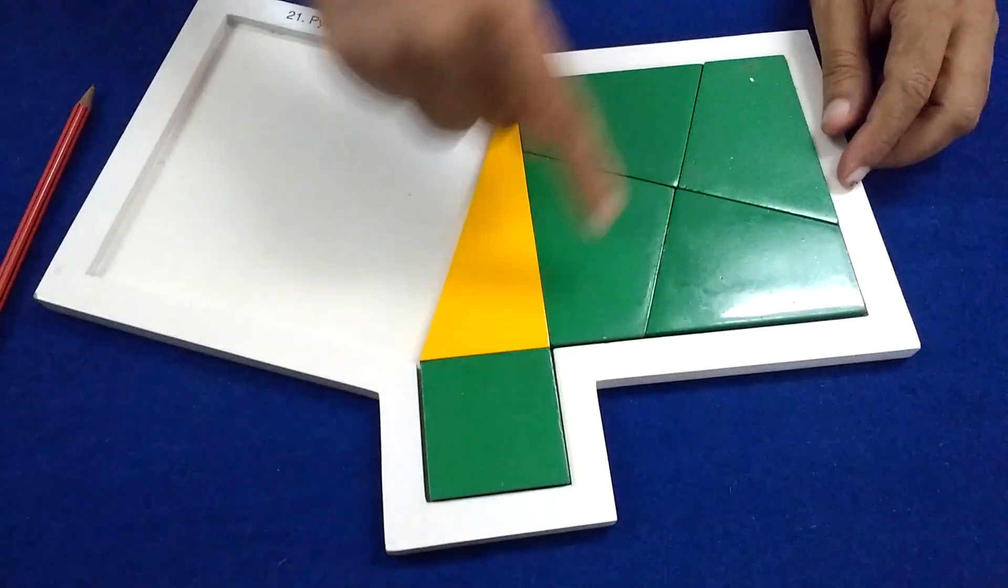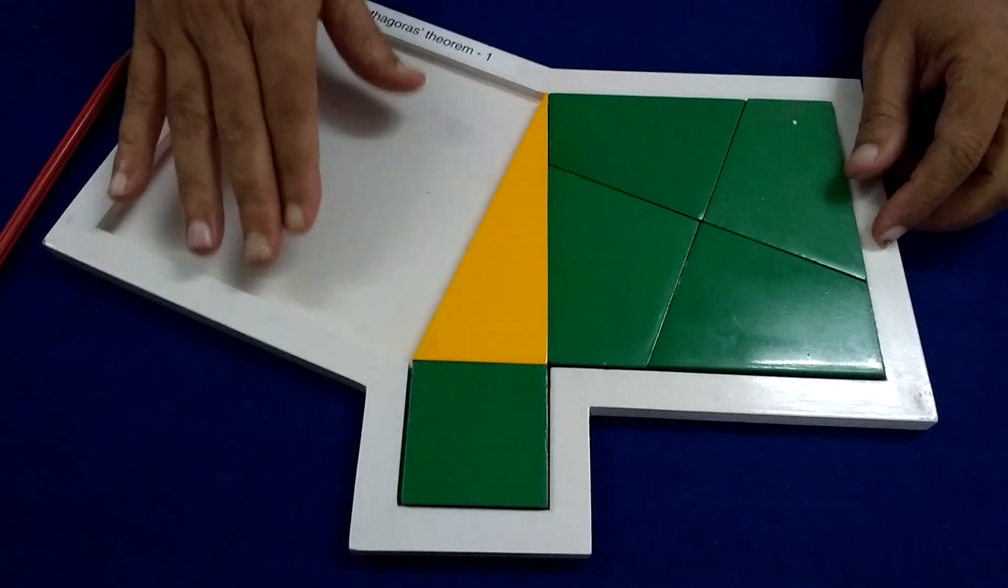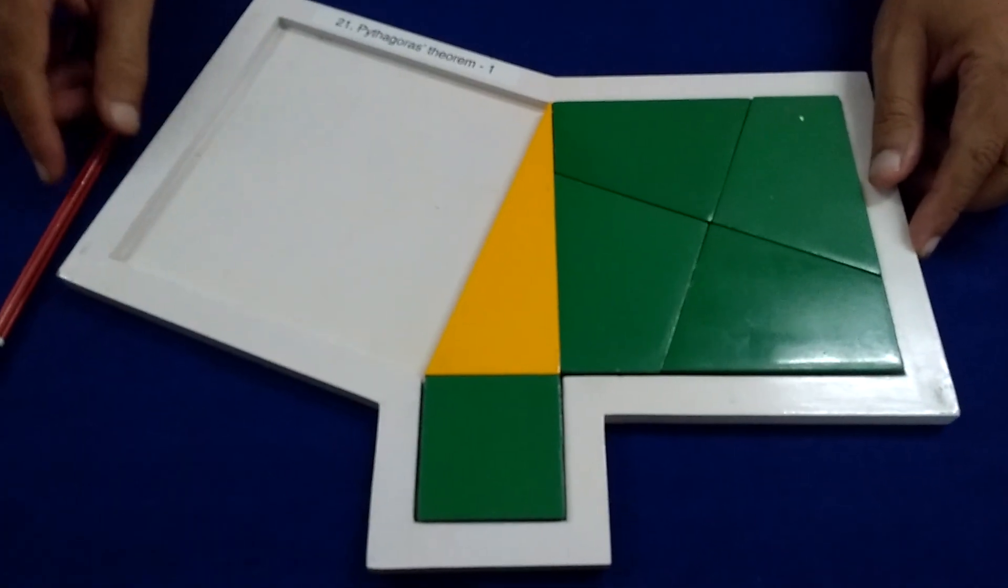So, if I am able to shift these two squares and occupy this vacant area completely, then we would have verified the Pythagoras theorem. So, let's try.